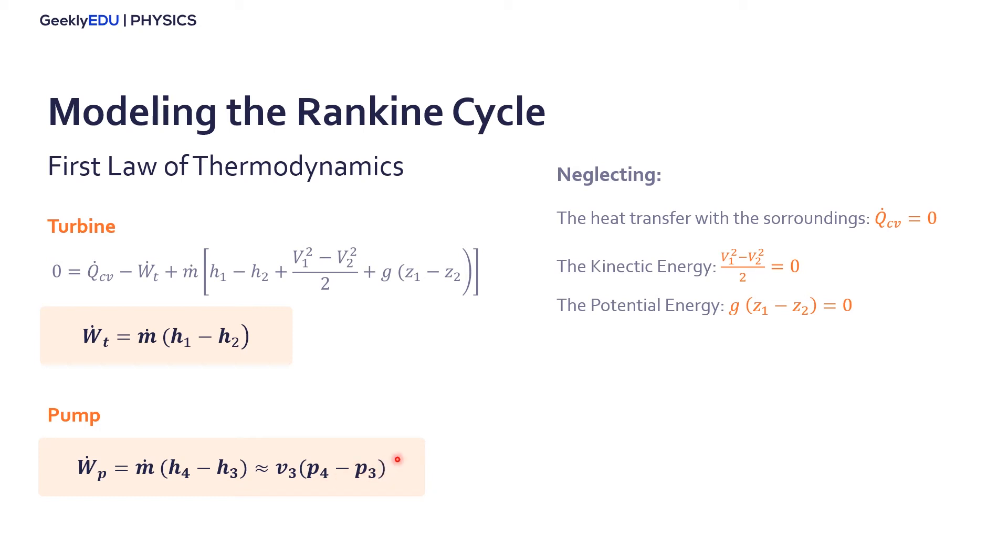We can apply the same law for the boiler to find the heat transfer in to the water, and for the condenser. So, see that we only need the mass flow and the enthalpies in each state of the cycle to solve the cycle.